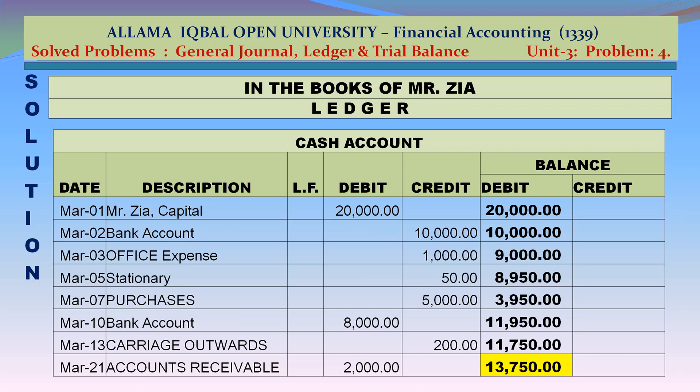In the books of Mr. Jia — Ledger. Cash account: debit — Mr. Jia capital March 1 Rs 20,000; bank account March 10 Rs 8,000 debit; accounts receivable March 21 Rs 2,000 debit. Credit — bank account March 2 Rs 10,000; office expenses March 3 Rs 1,000; stationery March 5 Rs 50; purchases March 7 Rs 5,000; carriage outwards March 13 Rs 200. Closing balance: Rs 13,750 debit.